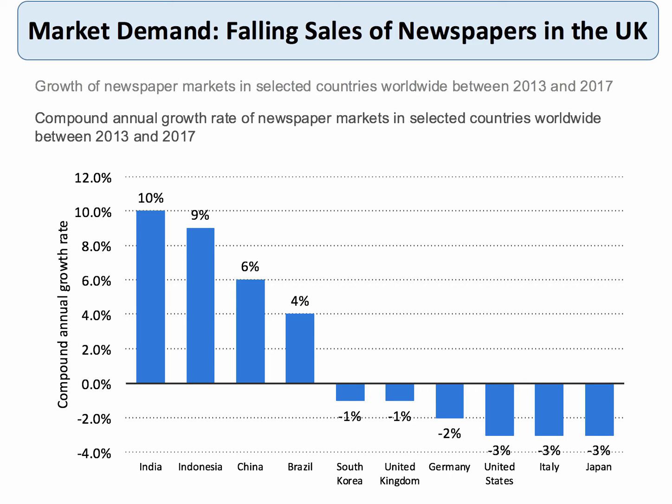Looking at the market demand for newspapers in various countries, you can see that between 2013 and the forecast for 2017 there is a negative compound annual growth rate of demand for newspapers in countries such as the UK, Germany, United States, and Japan — presumably because people are migrating to getting their news online. However, in emerging market countries like India, Indonesia, China, and Brazil, there is still a quite strong positive compound growth rate for newspapers, so market demand for newspapers in those countries continues to grow.